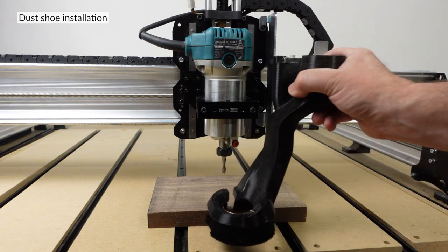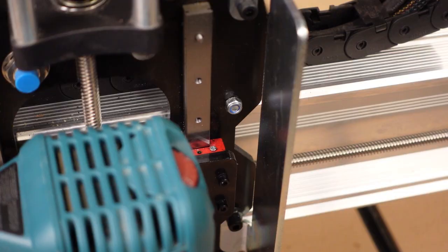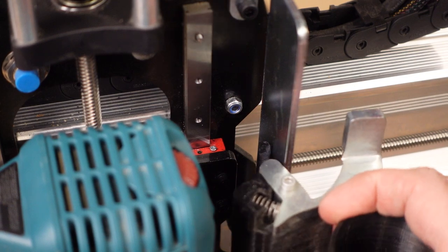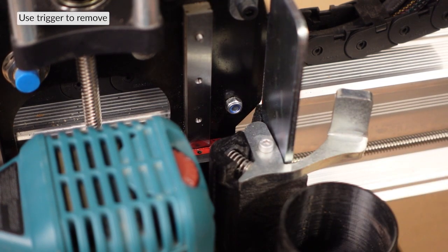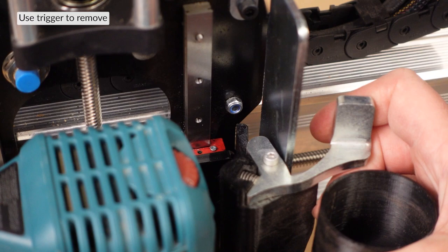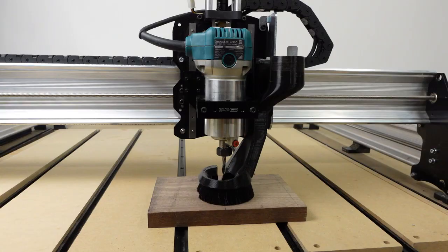We're going to fast forward a little bit and put the dust shoe onto the mount. Depress the trigger to push the magnets off the steel plate, making the removal of the dust shoe much easier.